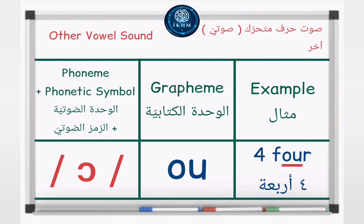Grapheme — letters OU, example: 'four' /ɔː/.